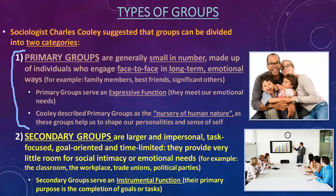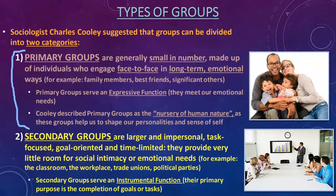Primary groups are generally much smaller in number. They're usually made up of individuals who we see often face to face, and we form long-term emotional relationships with these people. Going back to last week, our family and our peer groups are the most important agents of socialization, especially when we're younger — and those groups qualify as primary groups. We engage face to face, we see them often maybe every day, and we have long-term emotional ties with these people.